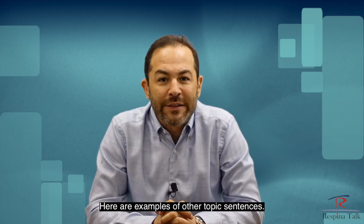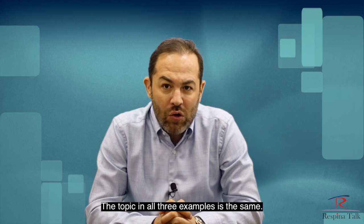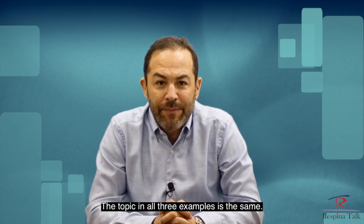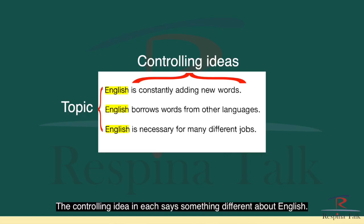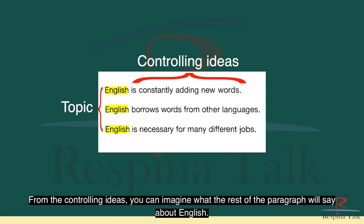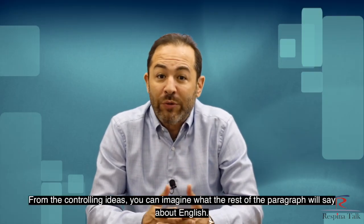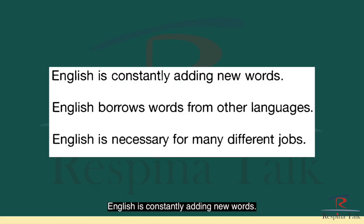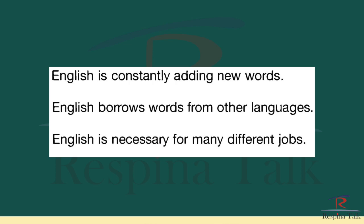Here are examples of other topic sentences. The topic in all three examples is the same: English. The controlling idea in each says something different about English. From the controlling ideas, you can imagine what the rest of the paragraph will say. Let's look at these: 'English is constantly adding new words.' 'English borrows words from other languages.' 'English is necessary for many different jobs.'